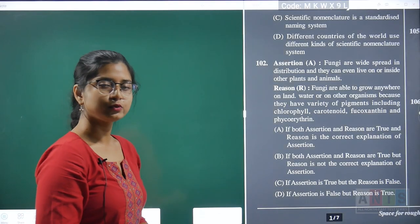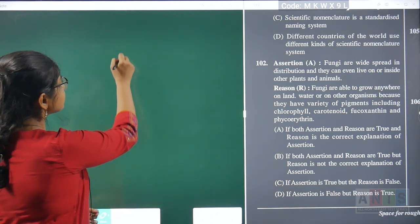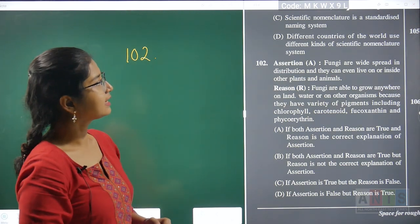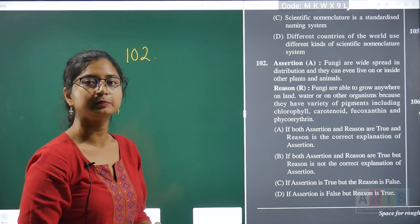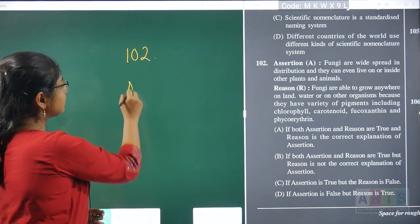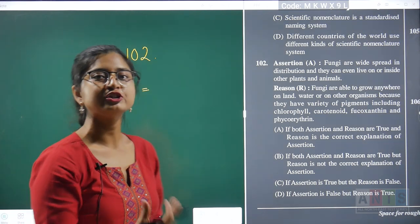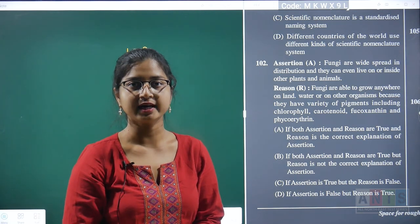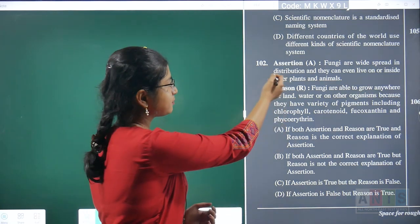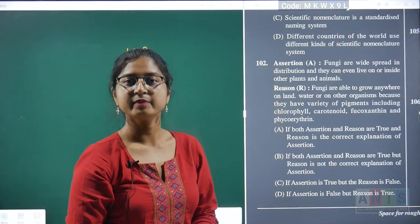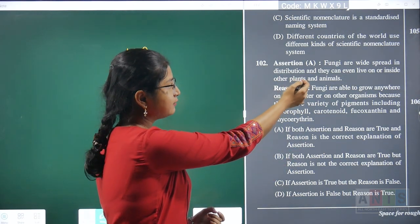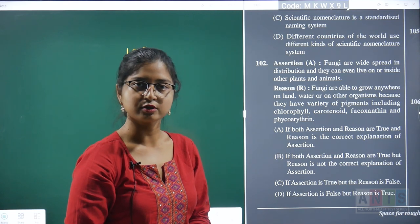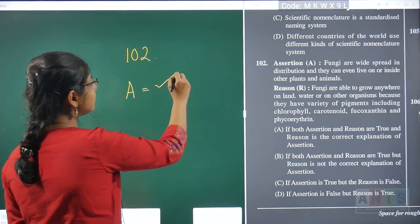Question number 102 is an assertion-reason based question. The assertion is that fungi are widespread in distribution and can even live on or inside other plants and animals. Fungi are considered cosmopolitan in nature, observed throughout a wide variety of habitats. Fungi can also behave as parasites, living on or inside other plants and animals. So the assertion is correct.